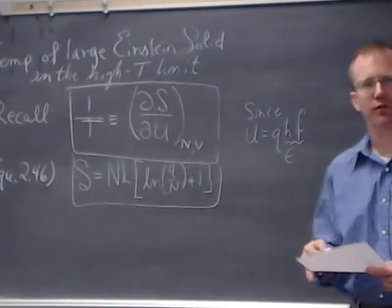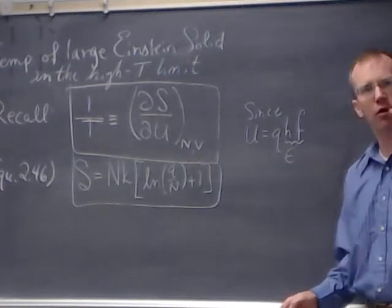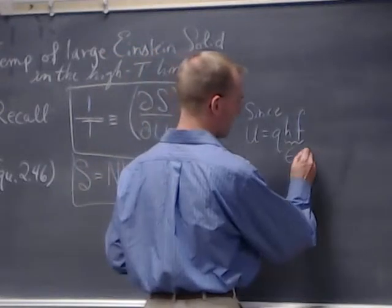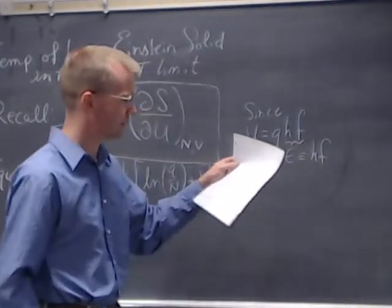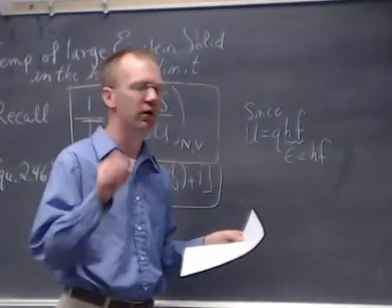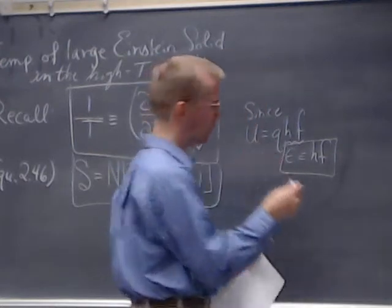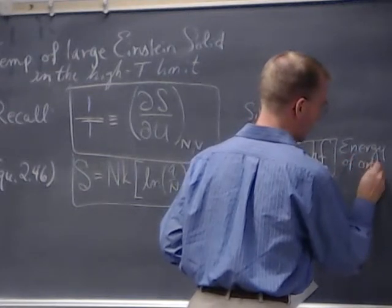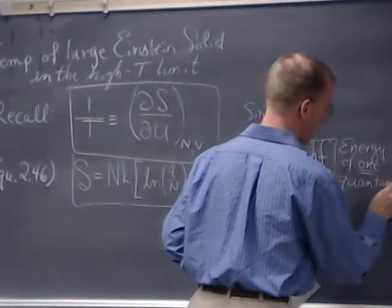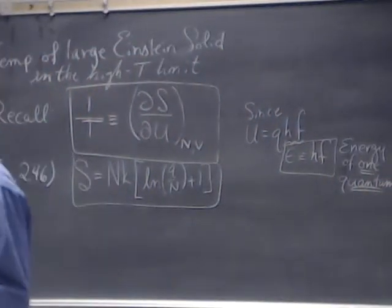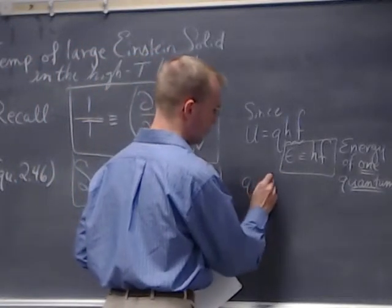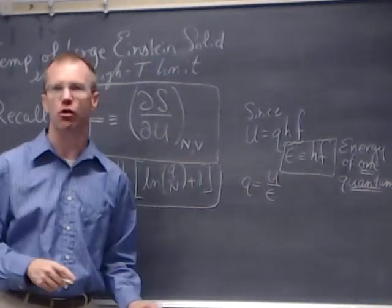Epsilon is often used in physics to represent some small amount of something, and here it's also convenient that it's the letter E for energy. So epsilon equals hf, which is the energy of one quantum of energy. Therefore, Q equals U over epsilon.